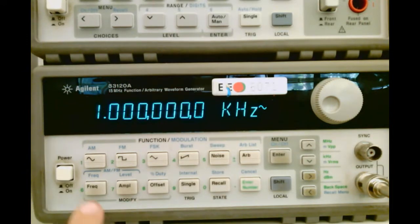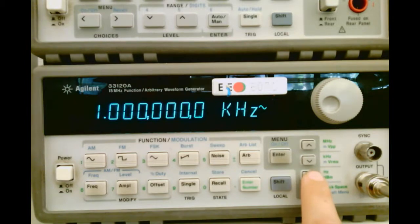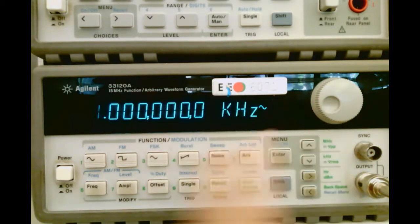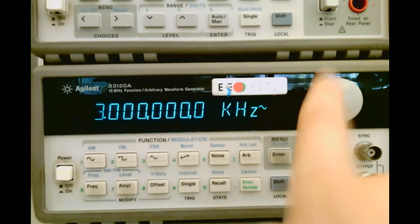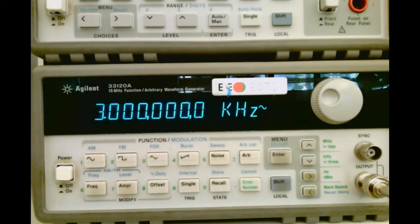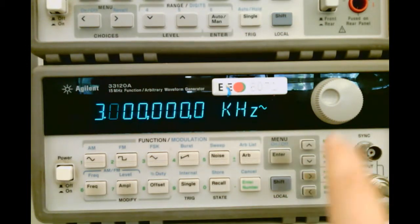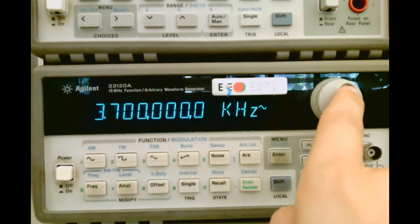I can change my frequency by hitting Frequency, and then using the arrow keys to select the number I want to change. So let's say I want 1 kHz to then go to 3, maybe I want 3.75 kHz, so I'll go to the next spot and do 7, 5.